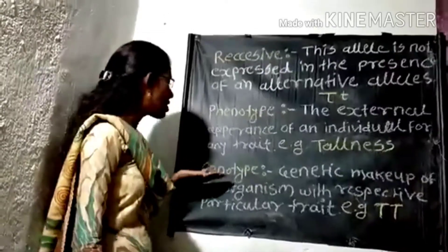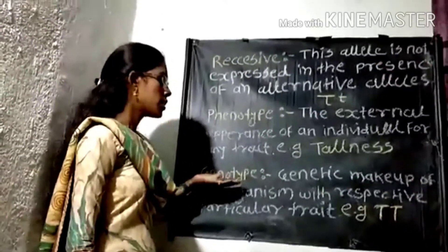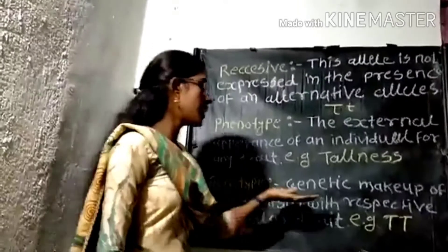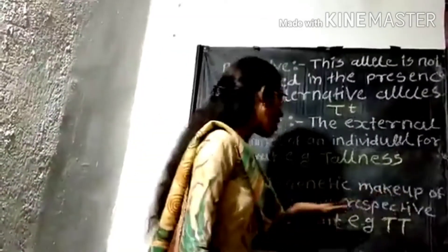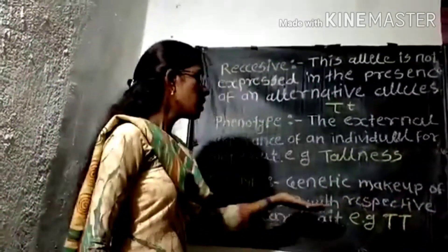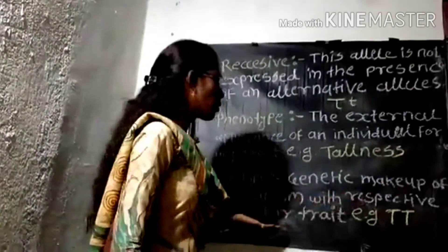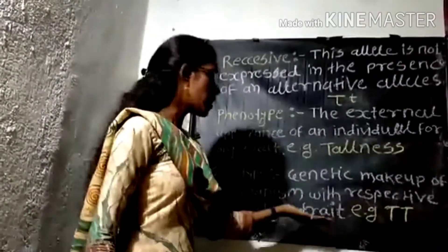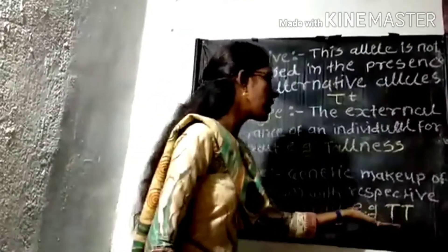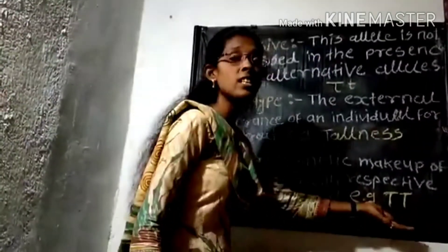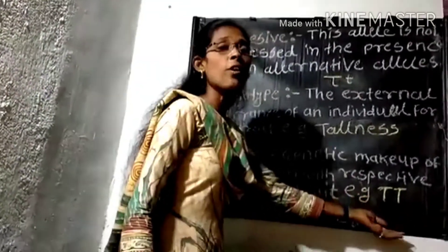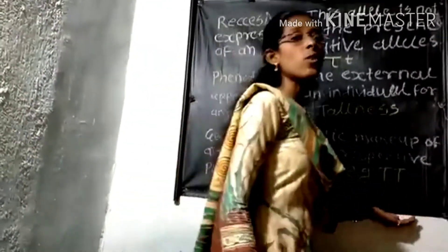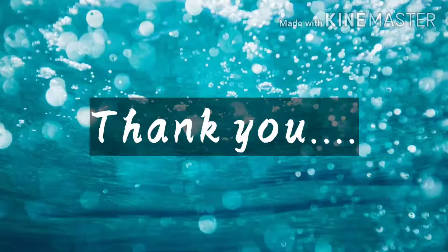The next term is 'genotype.' Genotype is the genetic makeup of an organism with respect to a particular trait. For example, capital T capital T (TT) is the genotype responsible for the tallness of a plant.